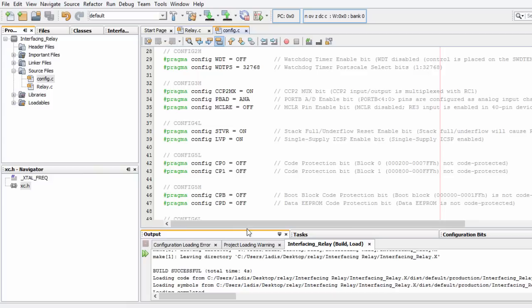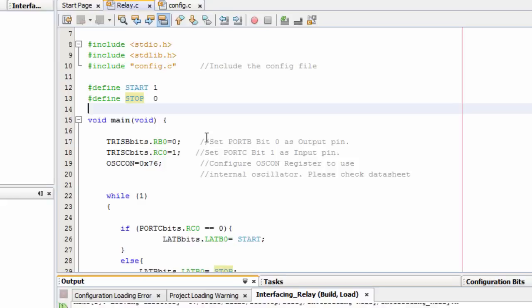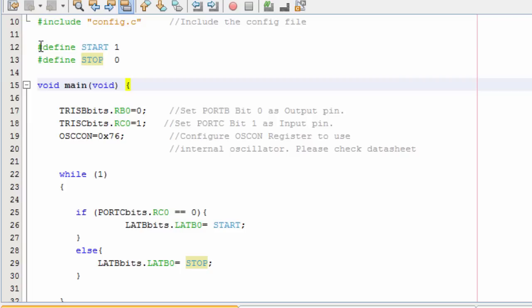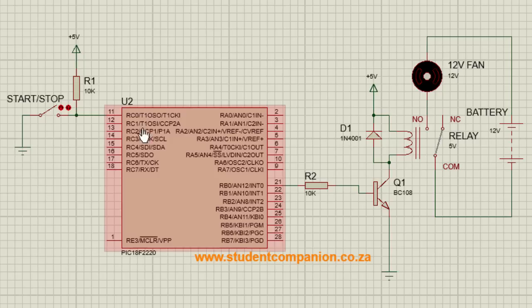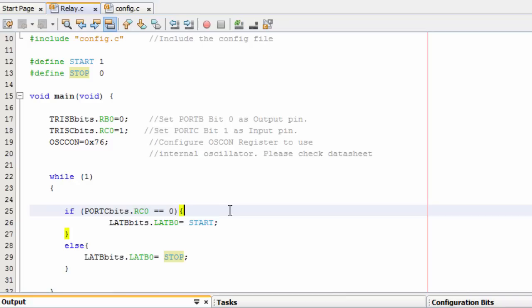This is our main source file. We named it relay. The first thing we did is to include our configuration bit. We define start equals to 1 and stop equals to 0. We set RB0 as an output pin and RC0 as an input pin. RB0 is where we connected our transistor. It's set to output pin, and RC0 is set to input pin, so that it's going to be able to read our switch.